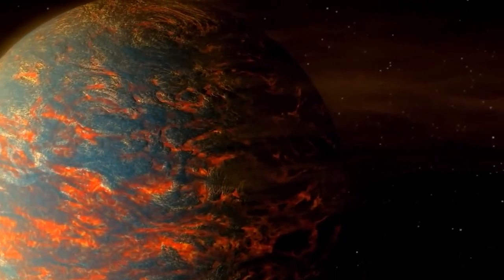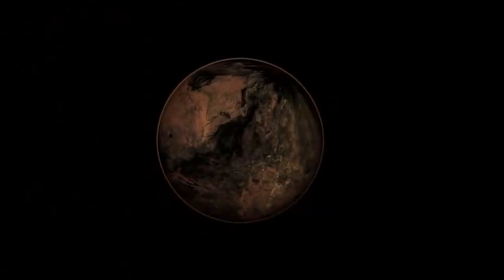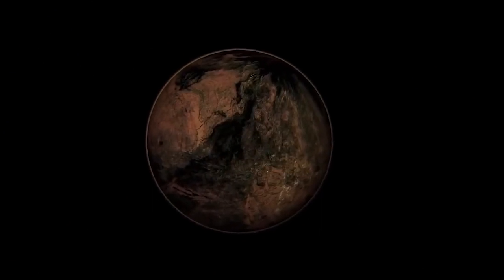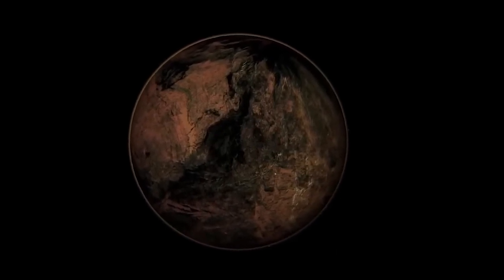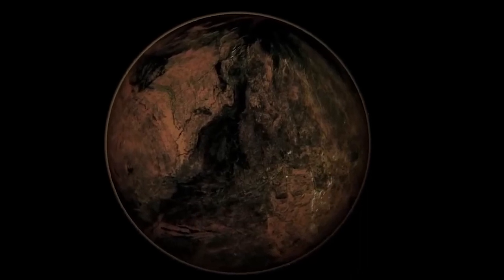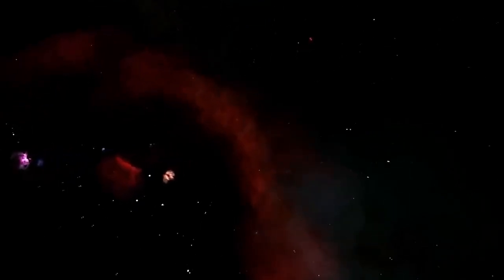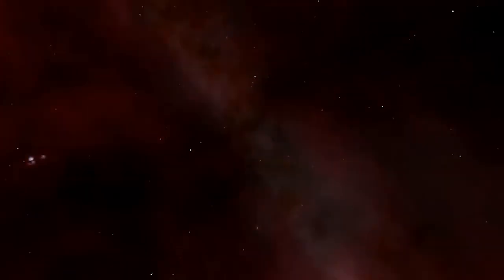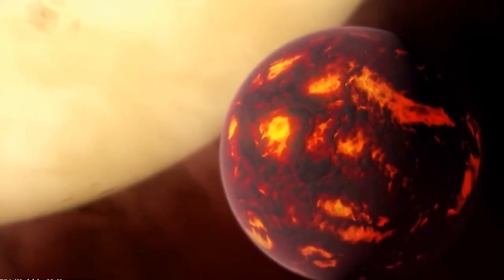HD-209458b, an evaporating exoplanet. In this picture, the planet is seen orbiting a yellow, sun-like star called HD-20945A, located 150 light-years away in the constellation Pegasus. The planet is a hot Jupiter, a type of extrasolar planet. Astronomers have noticed the atmosphere of an extrasolar planet evaporating into space for the first time using the NASA ESA Hubble Space Telescope. The volume of hydrogen gas escaping HD-209458b is estimated to be at least 10,000 tons per second but could be much more.